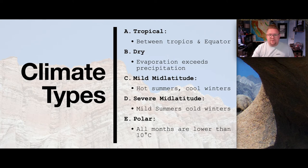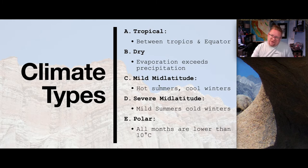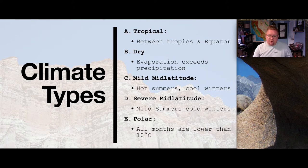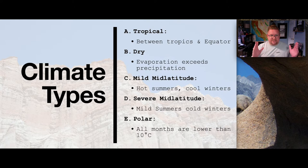It's given a letter A for tropical climate, B for a dry region, C for mild mid-latitude — that's roughly our area here in Santa Clarita. D is severe mid-latitude, which really means any region that experiences genuine seasons with actual snow and rain. E is polar, where all months are lower than 10 degrees Celsius — very cold with very limited precipitation. And we also have H, which is highlands.